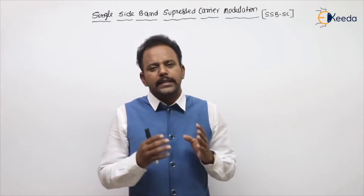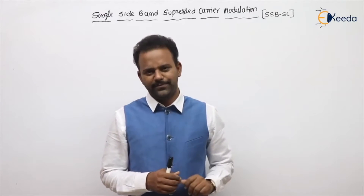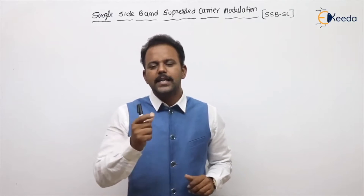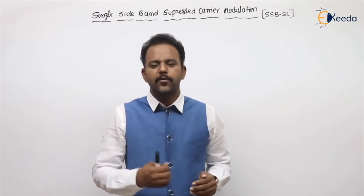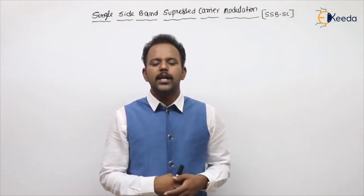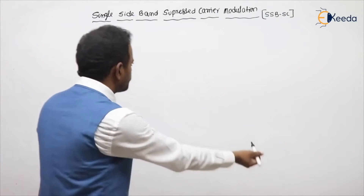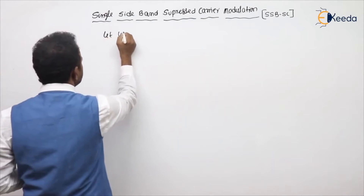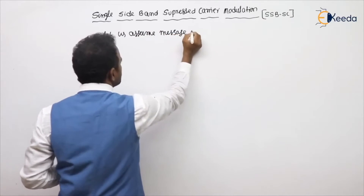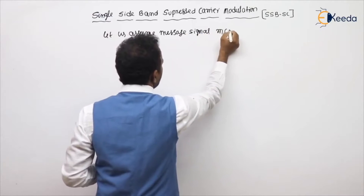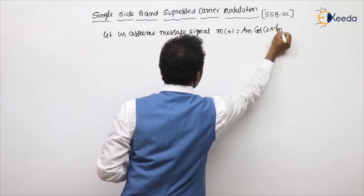Now, before going into the general expression of SSB, first we will discuss the single-tone expression. From that single-tone expression we will go to the general expression — that is the easier way to understand. To get the single-tone expression of SSBSC modulation, let us assume a message signal having a single frequency component: m(t) = AM cos(2π fm t).